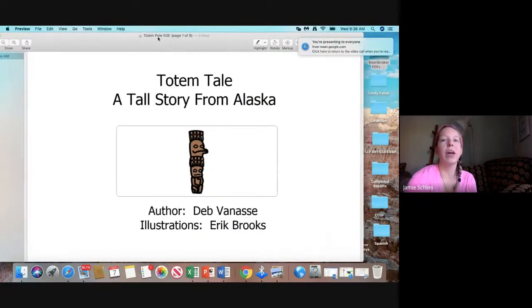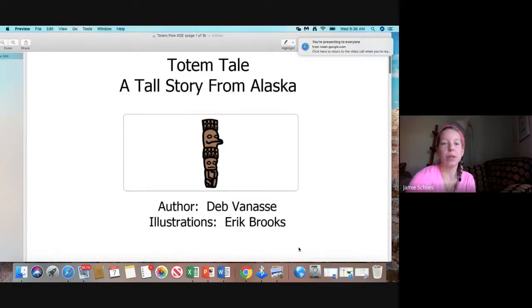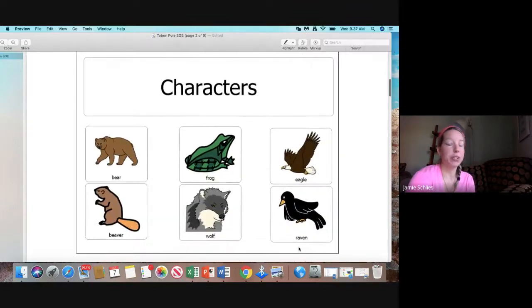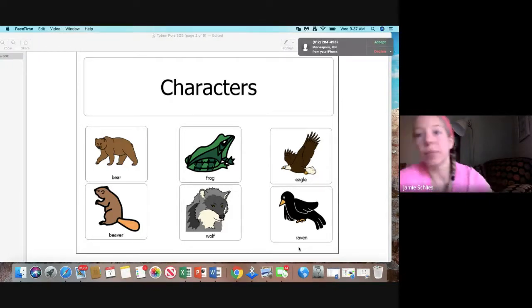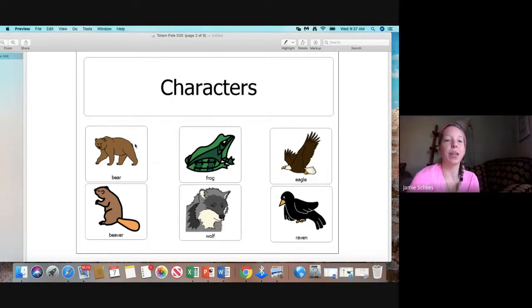Okay, so here we have a totem tale, a tall story from Alaska. So that was our cover page. Now we need to figure out who are our characters. Well, we had six main characters. They were the animals on the totem pole. And we have a bear, a beaver, a frog, a wolf, an eagle, and a raven, our six main characters.